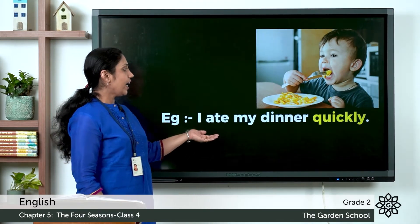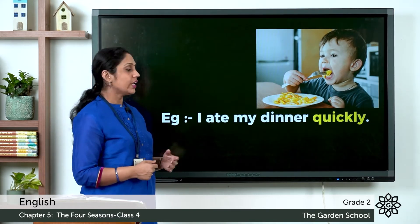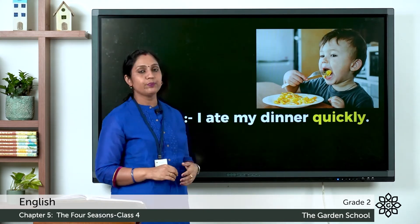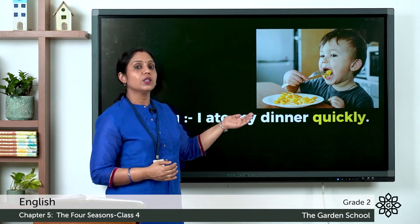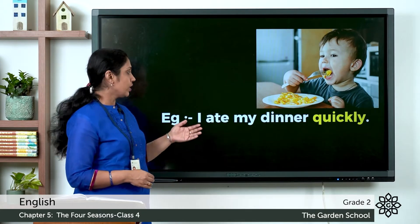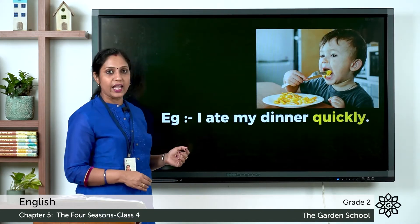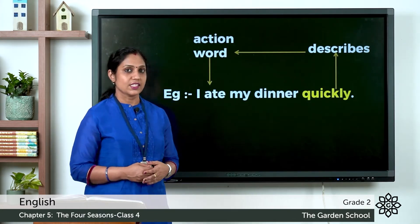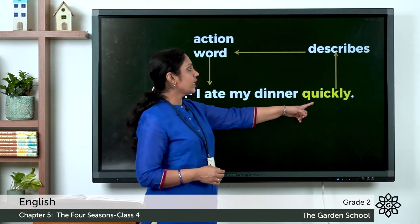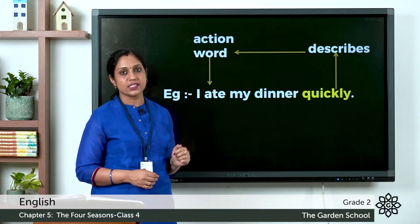Here you can see the sentence: I ate my dinner quickly. The action word is ate. The word quickly is describing the verb ate, so the word quickly is the adverb in this sentence. Quickly describes the action word ate.